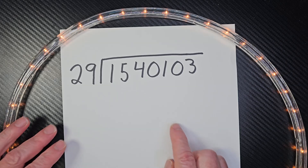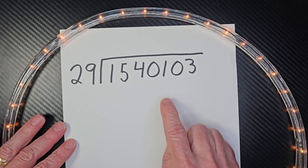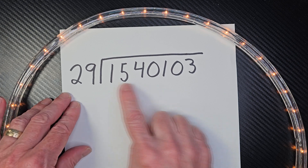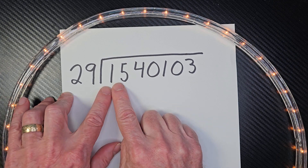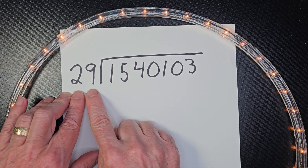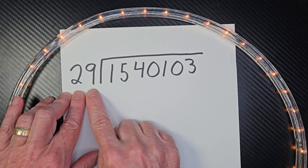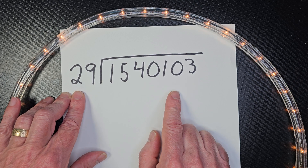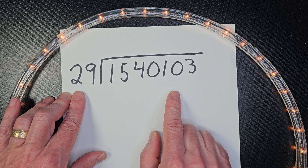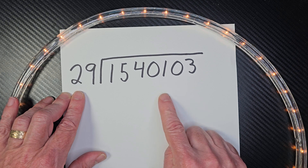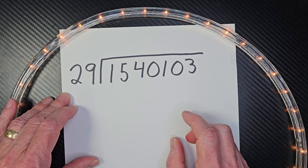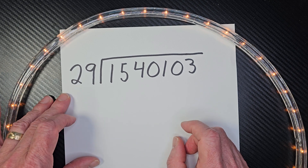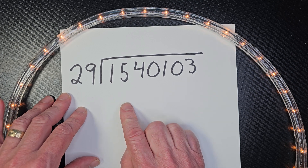Hey, welcome to the show. Take a look at this gigantic division problem. We're going to be dividing this big number by a two-digit number. Don't worry, we're going to take it easy, cheesy, lemon squeezy, step by step. And if you want to try this on your own, hit the pause button, and when you're ready to check it with me, hit the play button. All right, let's go ahead and begin.